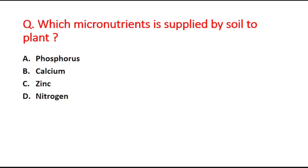Next question: which micronutrient is supplied by soil to plants? Option A is phosphorus, option B is calcium, option C is zinc, and option D is nitrogen. The right answer is option C, zinc.